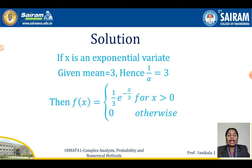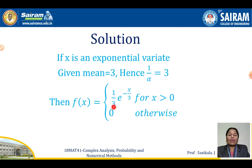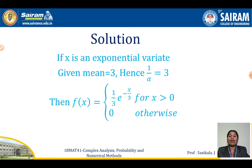Substituting alpha = 1/3 into f(x), we get f(x) = (1/3) times e to the power minus x by 3, for x greater than 0, and 0 otherwise.